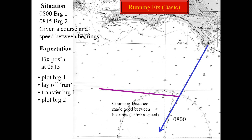You can draw the course from any point on the bearing line because your ship can be anywhere on it. Draw the course and speed made good for say 15 or 10 minutes. This becomes the course made good, denoted by double arrows. Then after those 15 minutes, you transfer the previous position line to the end of the course line. Transferring the position line means you draw a parallel line at the same bearing to the end of the course line. Transferred position lines are denoted by double arrows.